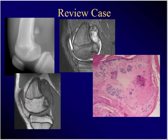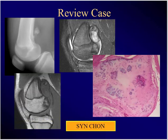Knee pain with activity, 25-year-old — this plain film, histopath, and MR. What's the diagnosis? Is this a soft tissue tumor, something with the bone, or is it intra-articular? Looks intra-articular. What's the diagnosis? Synovial chondromatosis.